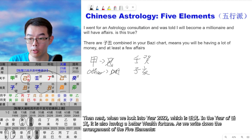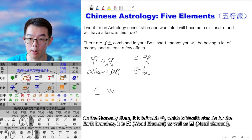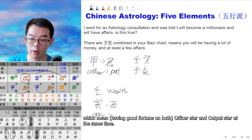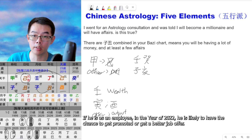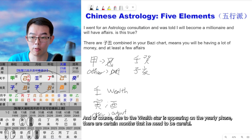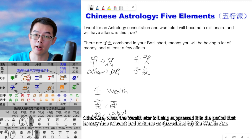In year 2022, which is Ren Yin, it is also having a better wealth fortune. On the heavenly stem it is Ren, which is the wealth star. As for the earth branches, it is Yin — wood elements — as well as You, metal elements, which means the officer star, as well as the output star. If he is an employee in 2022, he is likely to have the chance to get promoted or receive a better job offer. However, due to the wealth star appearing on the yearly phase, there are certain months he needs to be careful — when the wealth star is suppressed, it is the period he may face relevant bad fortunes related to wealth.